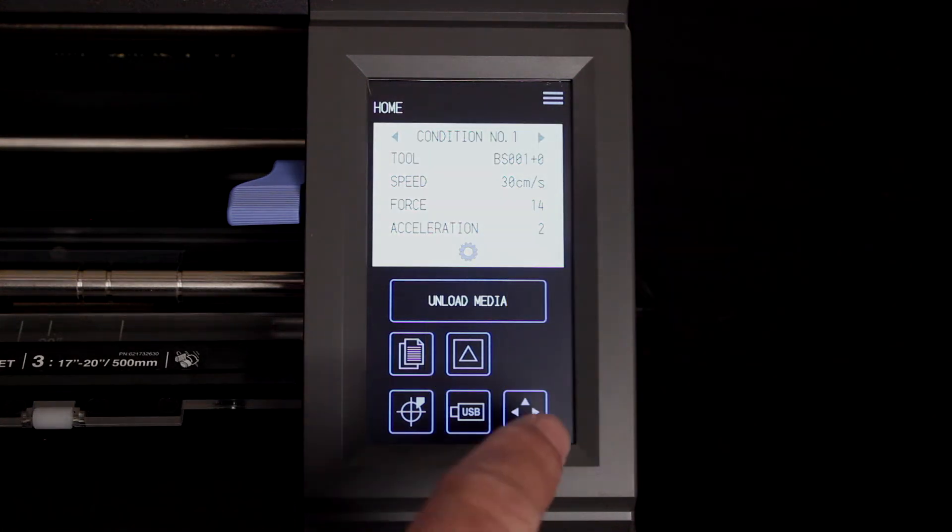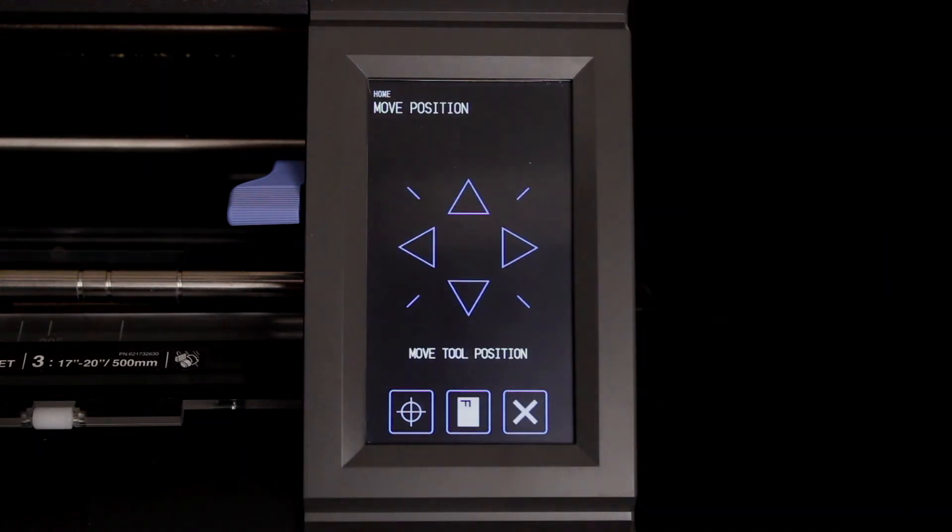Let's go back and press the move tool head button. This opens up the move tool head menu. As mentioned, this allows you to move the tool head anywhere on the media that is within the push rollers.